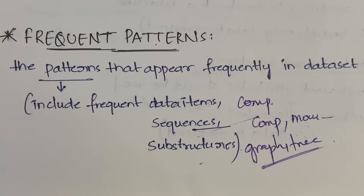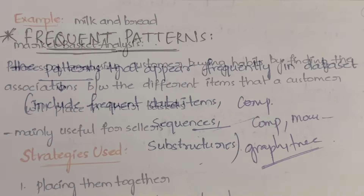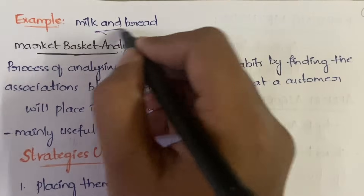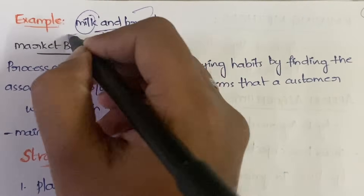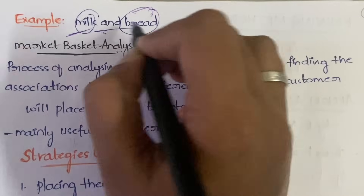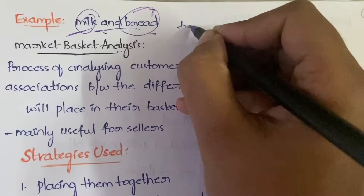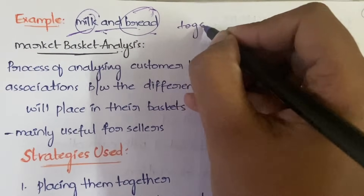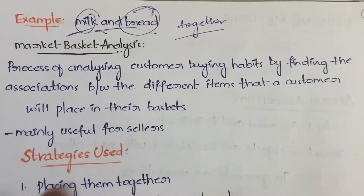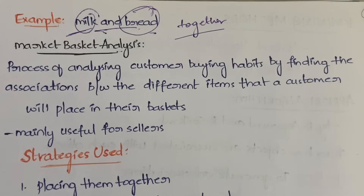For example, consider milk and bread. Milk is one data item and bread is another, but they are frequently bought together — for breakfast or lunch. So they form a frequent pattern. You can also say it's a frequent subsequence: first a customer buys milk, then goes to buy bread.